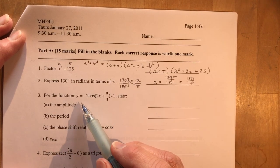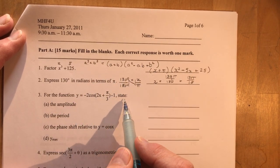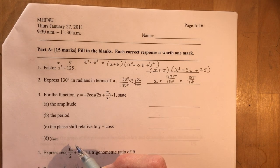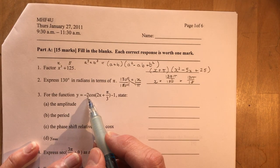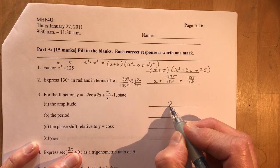For the function y equals negative 2 cos 2x plus pi over 3 minus 1. State the amplitude. So remember that when you talk about amplitude it's always an absolute value. Do not say the amplitude is negative 2. The amplitude is simply 2.